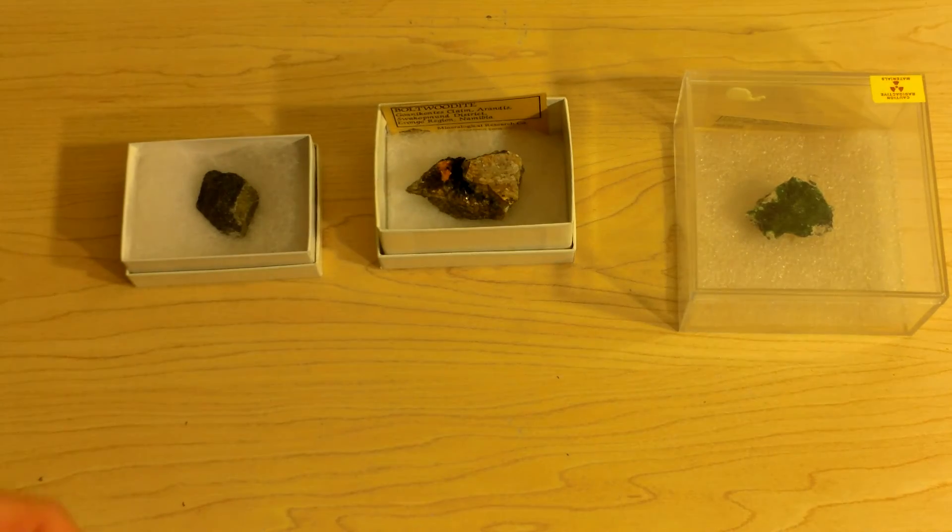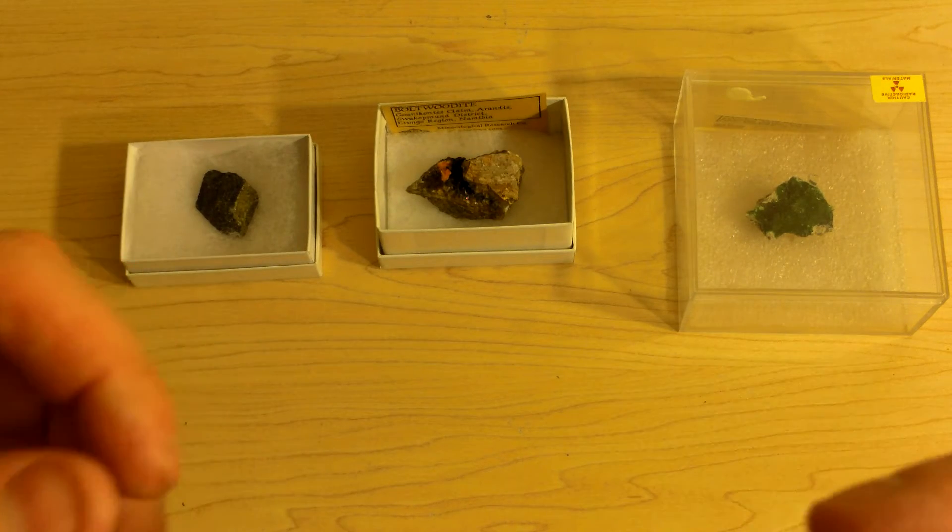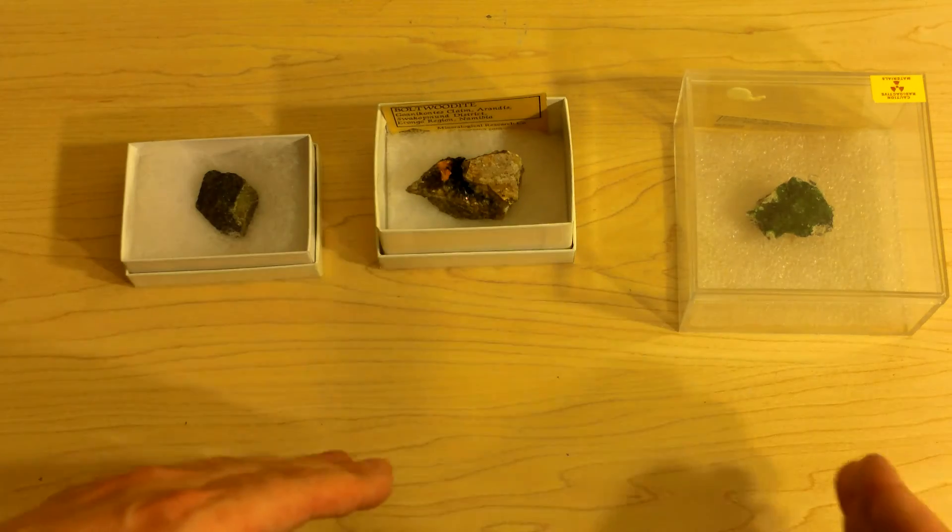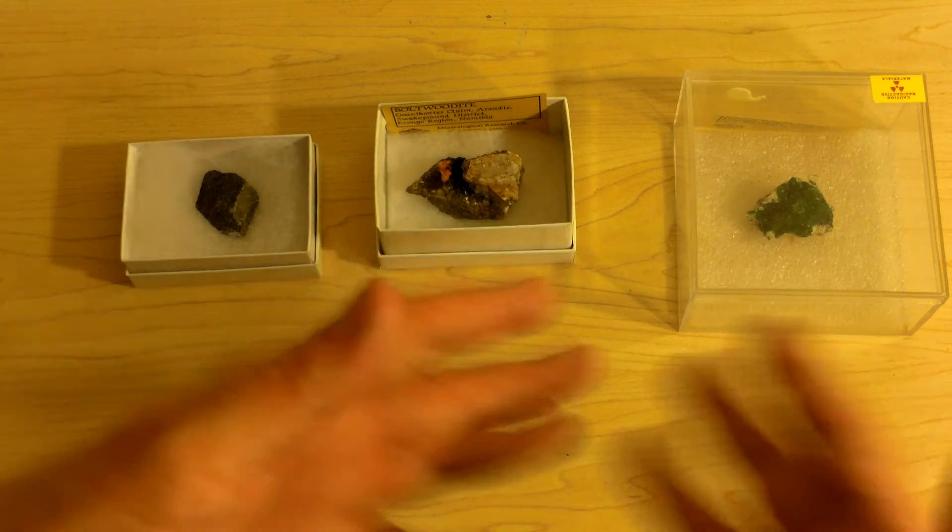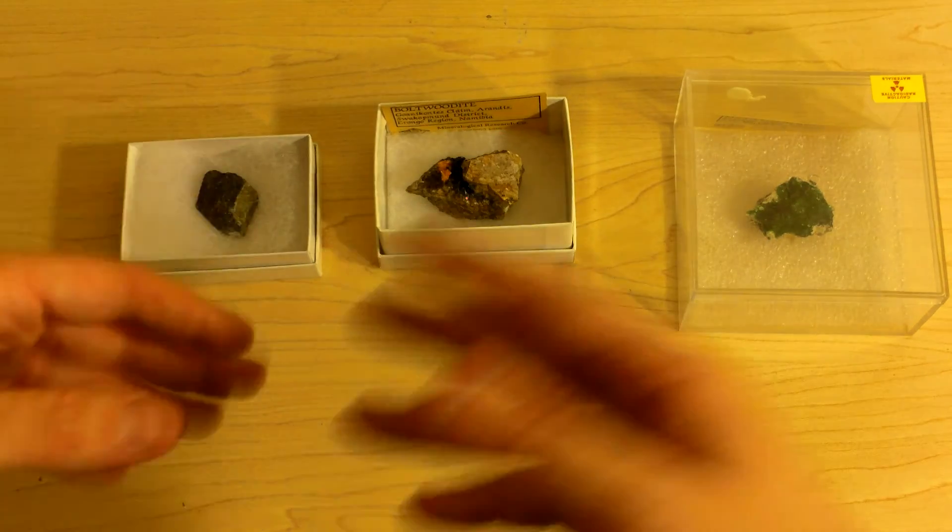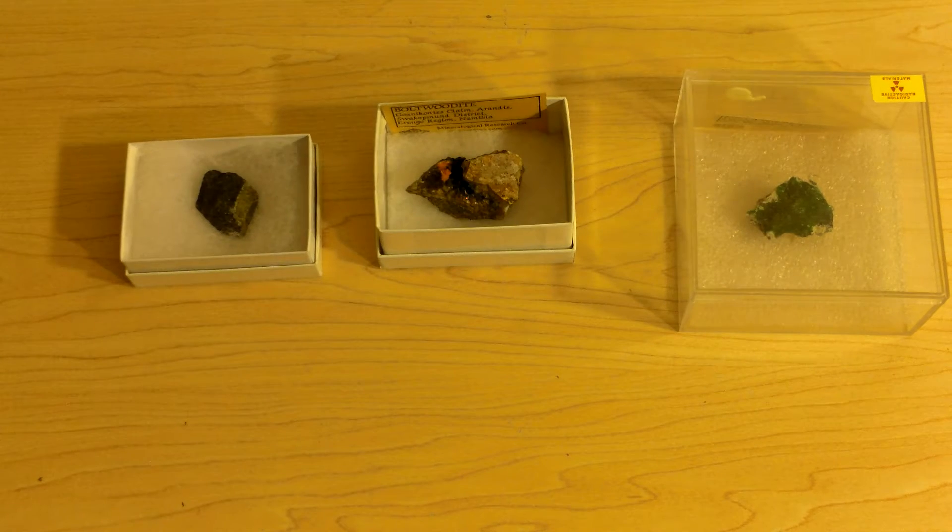Now, eBay can be perfectly reputable. But when you're buying from a place like eBay, you need to make sure you contact the seller and know about the seller before you purchase something like Uranium to be absolutely sure. Just because. You never know. You get really, really reputable and really, really unreputable or disreputable.